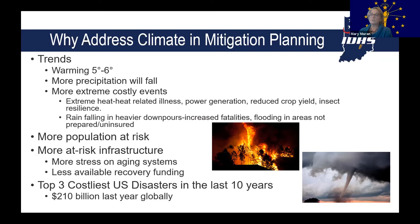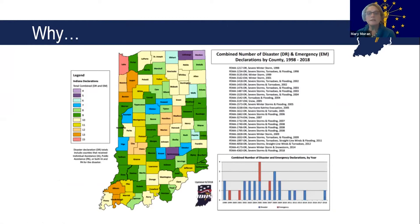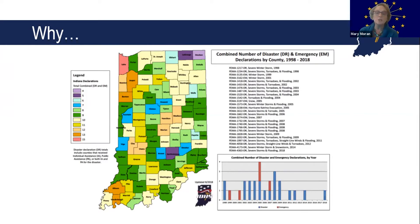In the disaster response and recovery business, the top three costliest US disasters have occurred in the last 10 years. We also know that last year globally, $210 billion was spent on disaster response and recovery. We know that these costliest disasters are heavily impacted by a change in climate environment, and you can see how important it is to address climate in every county plan.